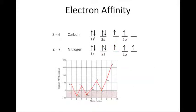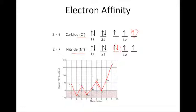Now let's look at the periodic trend in electron affinities between carbon and nitrogen. Here's the arrow notation for carbon and nitrogen. When we add an electron to carbon, we have the carbide anion; when we add it to nitrogen, we have the nitride anion. The electron added to carbon goes into an empty 2p orbital. For nitrogen, the electron goes into an already occupied 2p orbital. There is a drop in electron affinity going from carbon to nitrogen, indicating that carbon accepts an electron more easily than nitrogen.